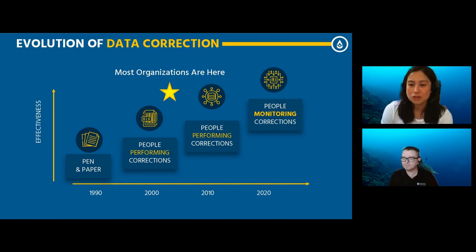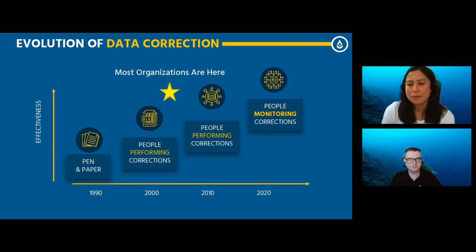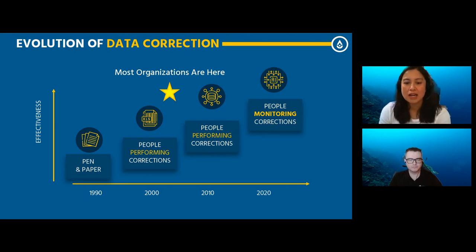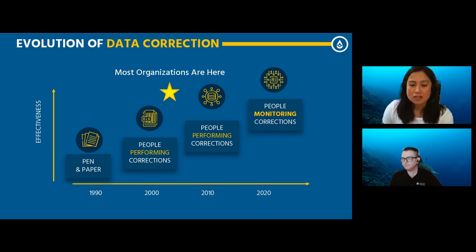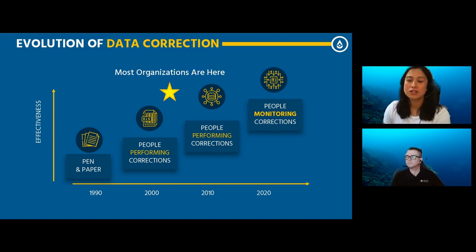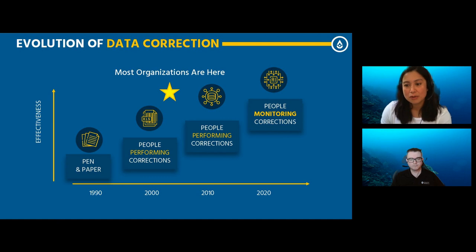What is common about each of these phases is that the role of people in the data correction workflow has been to perform the corrections on the data. But now we've reached a point where we can reimagine that role. IoT, cloud applications, and telemetry have shifted focus toward networks, making greater amounts of data more accessible. Machine learning and artificial intelligence are allowing us to learn from data and take action more quickly — transitioning the workflow from people performing corrections to people monitoring machines performing corrections.